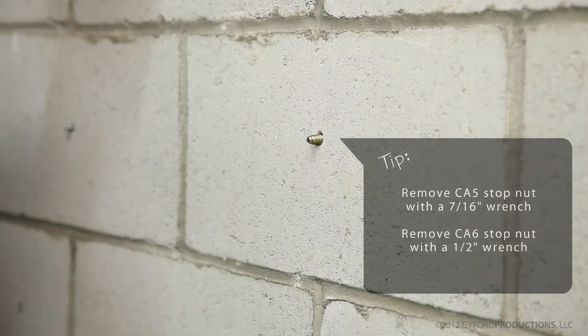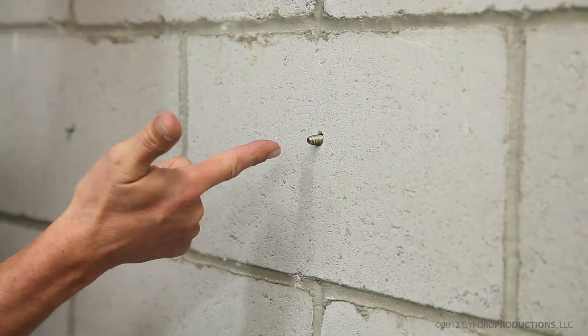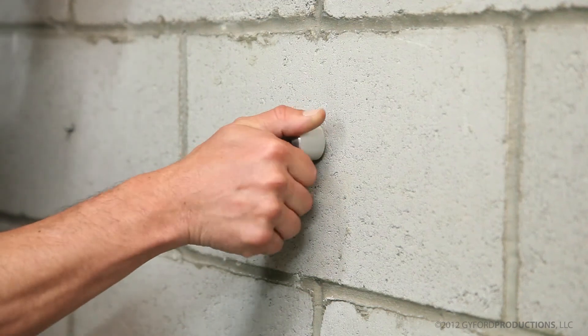Take off that nut, and we've got a stud mounted in the wall. Now we can attach a barrel or other hardware.